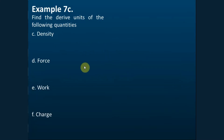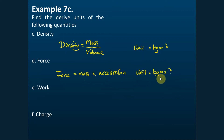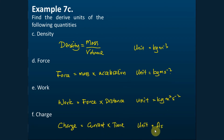For density, the formula is density equals mass over volume, and the unit is kg per meter cubed. Force equals mass multiplied by acceleration, and the unit is kg·m per second squared. Work equals force multiplied by distance, and the unit is kg·m squared per second squared. Charge equals current multiplied by time, and the unit is ampere·second. Use these formulas to find the units and check your answers.